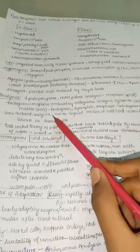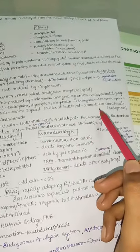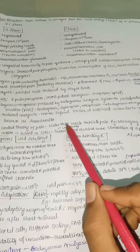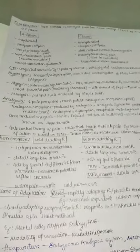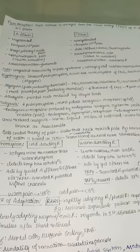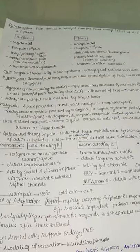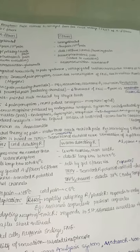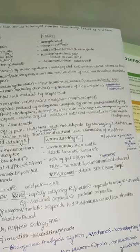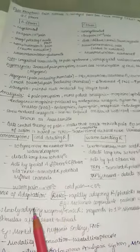Acupuncture works by pricking needles into the skin, which causes release of endogenous opioids, decreasing pain. Stress-induced analgesia is seen in injured soldiers at the battlefield and occurs mainly due to endogenous cannabinoids known as anandamide.